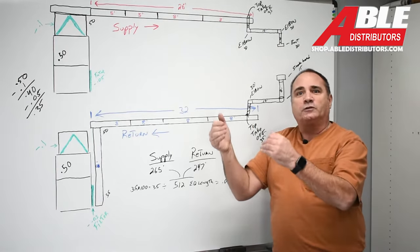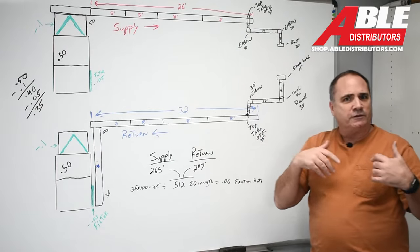So when we add all that up, the supply comes out to be 265 feet for the longest run. And that's again, it might be closer to the furnace, but more turns and more equivalent length.